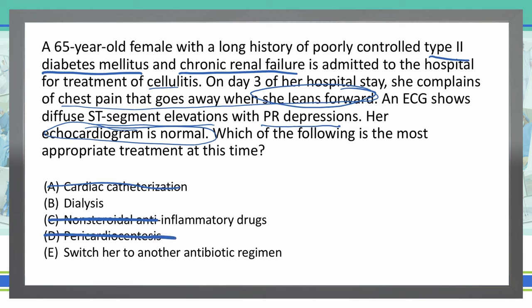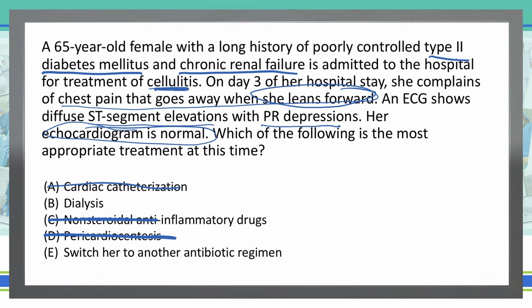Option E: switch her to another antibiotic regimen. She did have cellulitis, which is why she was originally admitted. If we had issues with the antibiotic, like anaphylaxis due to an allergic reaction, we would want to switch it. However, we're not seeing any of that here, and antibiotics don't cause uric acid levels to rise and produce uremic pericarditis. So E is not the answer, which leaves B as my final answer.